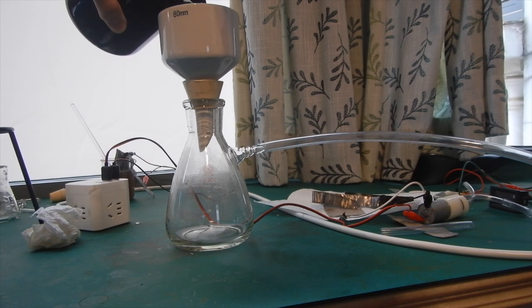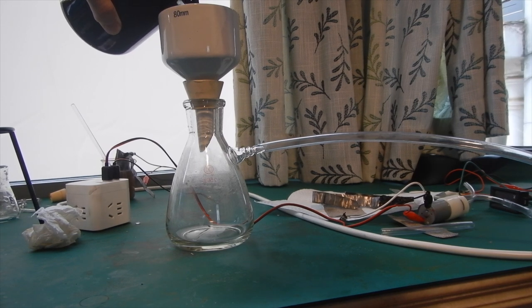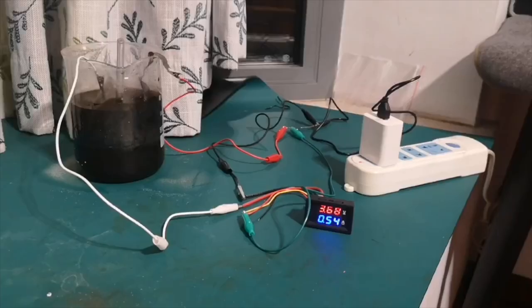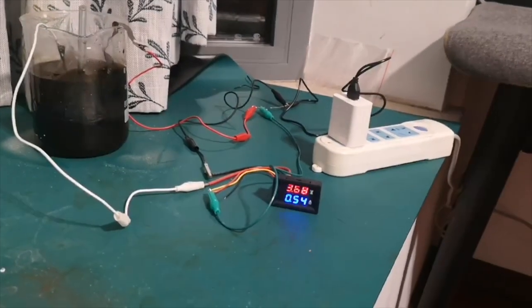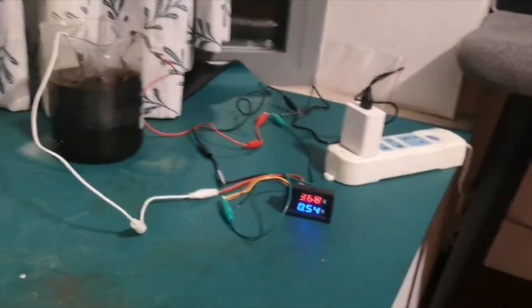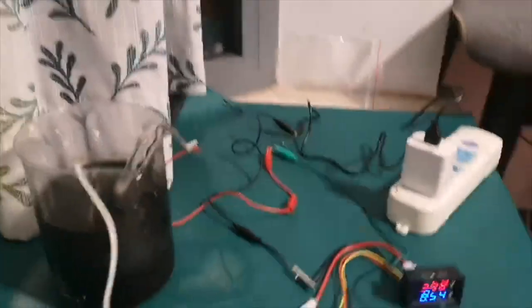I ended up putting everything back to the large beaker and electrolyzed it for another week. Alright, here we are after the week. The current had gone up to 0.54 amps, and everything is running decently.